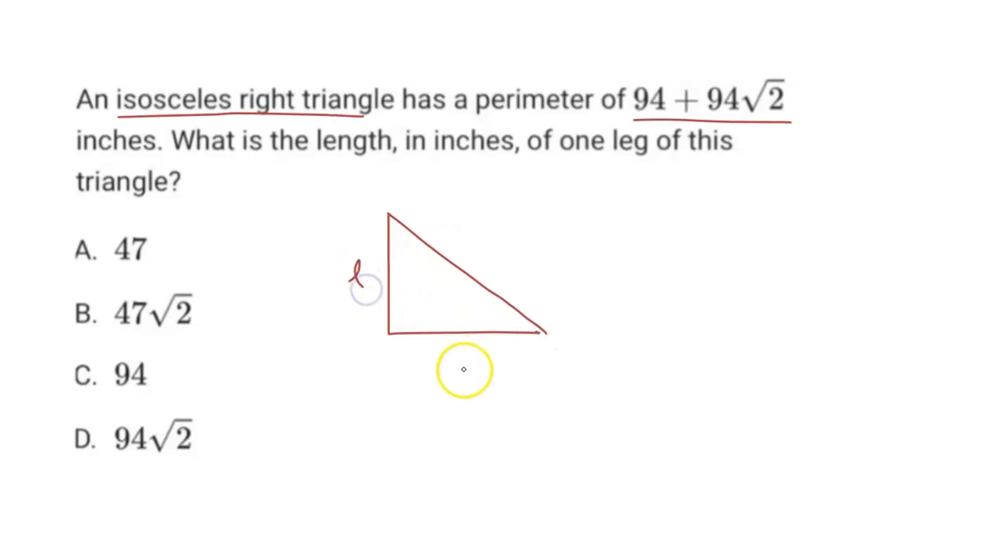So if we call this L for length, these two legs must be equal. And then we'll call this last part X. We're trying to find the actual length, the value of one of the legs, trying to find L based off the given perimeter.